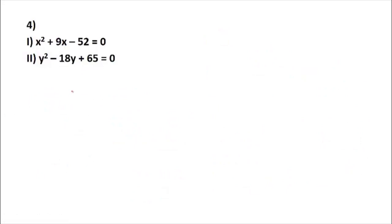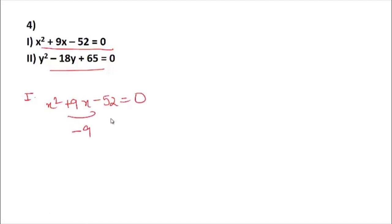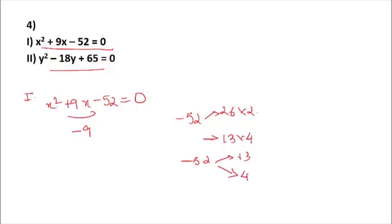Please try question 4 on your own first by pausing the video — only then will the concept become clear. First equation: x² + 9x − 52 = 0. Take negative of 9 giving −9. Break 52 as 13 × 4 = 52. Since −13 + 4 = −9, solutions are x = −13 and x = 4.